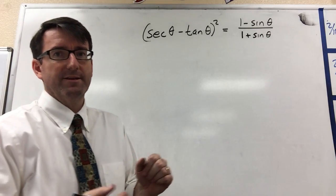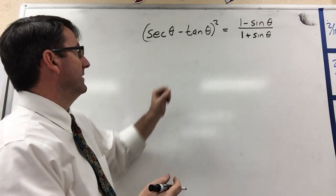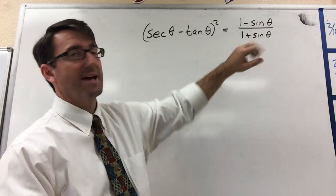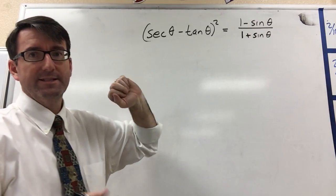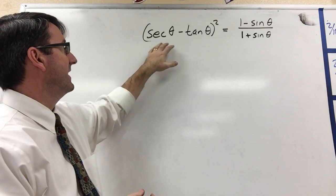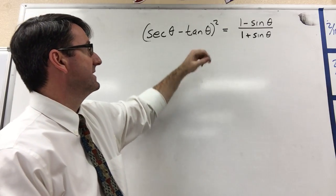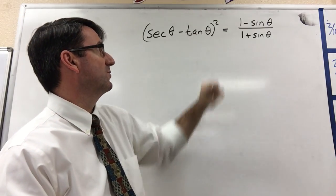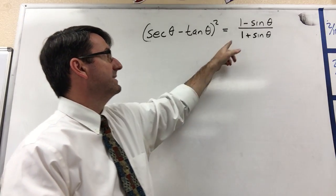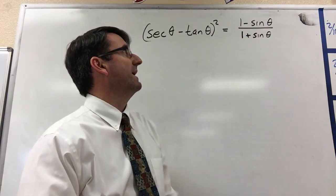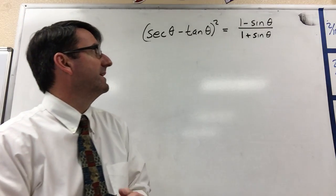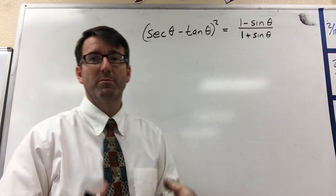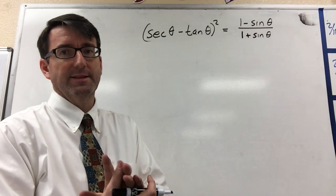Number 5 asks us to verify this identity: secant theta minus tangent theta, quantity squared, is equal to 1 minus sine theta divided by 1 plus sine theta.